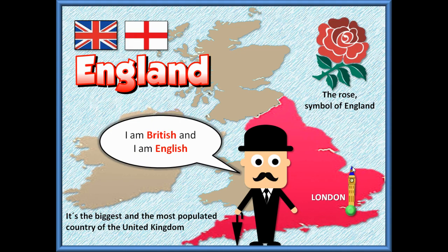Let's see and talk about each of the countries within the UK. The first one is England — it is this pink part here. People from England are British or English. England is the biggest and the most populated country of the United Kingdom. Its symbol is the rose, and this is England's flag.